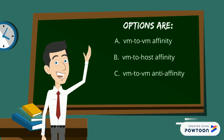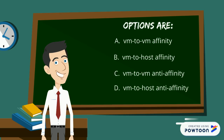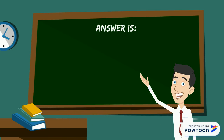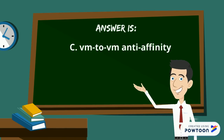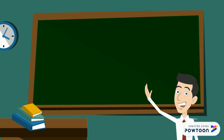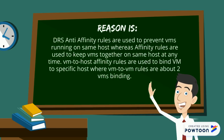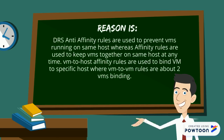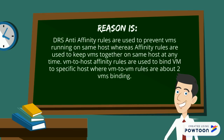The answer is VM to VM anti-affinity. Let's understand the reason why. DRS anti-affinity rules are used to prevent VMs from running on the same host, whereas affinity rules are used to keep VMs together on the same host at any time.